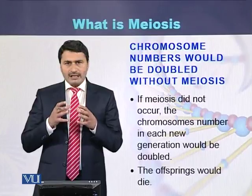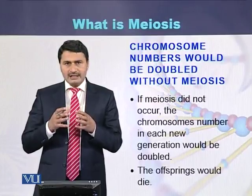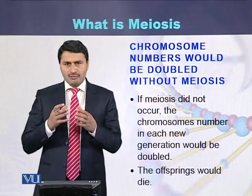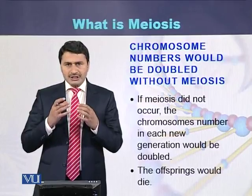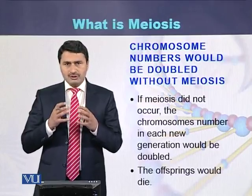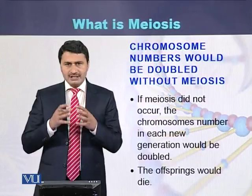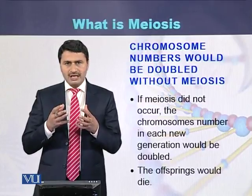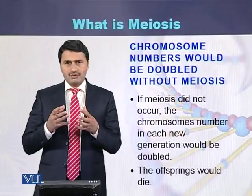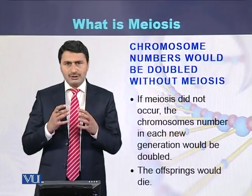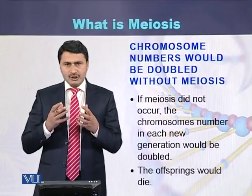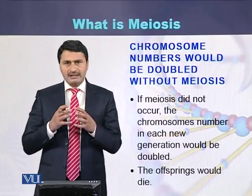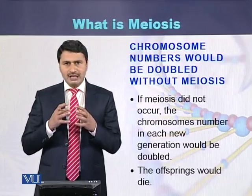So it is necessary that during meiosis the number of chromosomes should be reduced. Meiosis is a process that reduces the number of chromosomes. If the number of chromosomes is not reduced, the individual or the zygote will not survive and the individual will die.